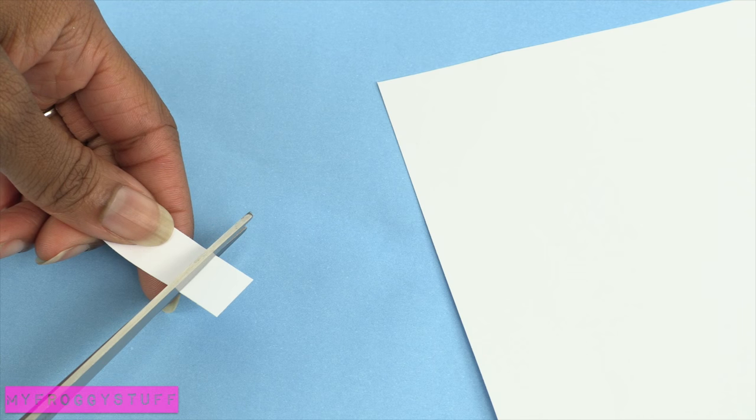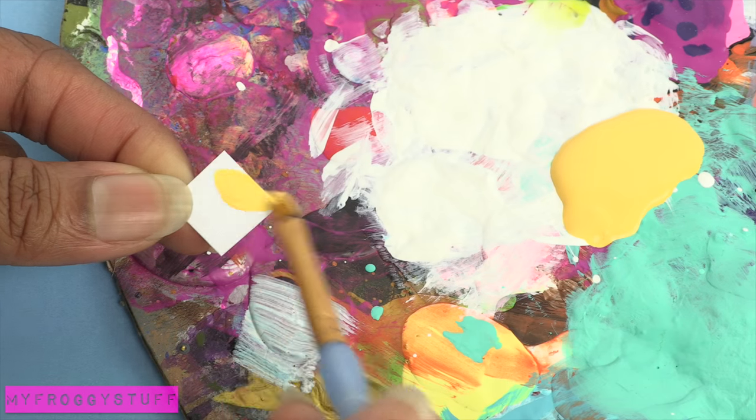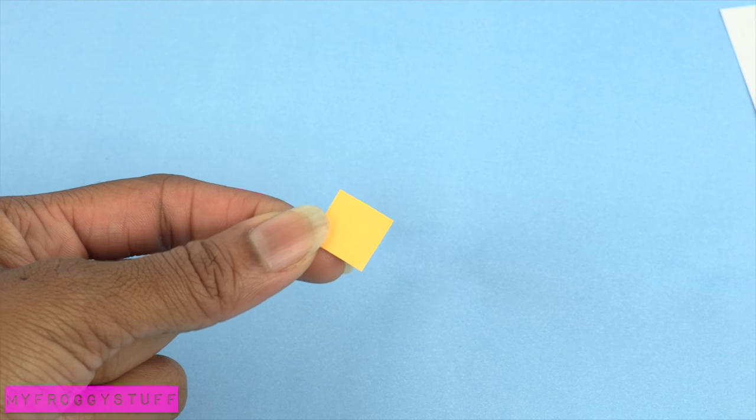Cut white paper into small squares and paint them with acrylic paint to make sliced cheese.